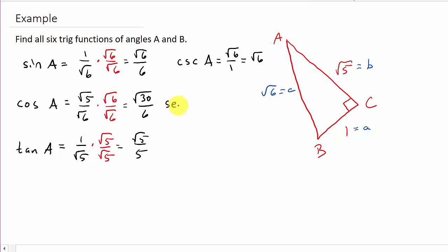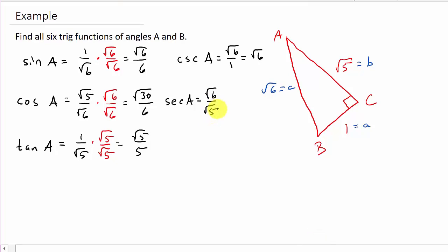If we do secant A, I'm just going to go ahead and flip the cosine fraction before rationalization. So that's going to be square root of 6 over square root of 5. And then we'll rationalize the denominator by multiplying by square root of 5 over square root of 5. Square root of 5 times square root of 6 is square root of 30. Square root of 5 times square root of 5 is 5. So secant A is square root of 30 over 5.